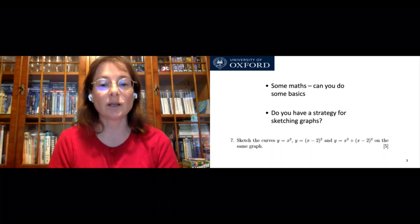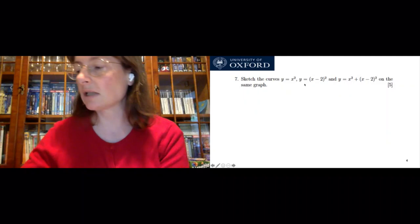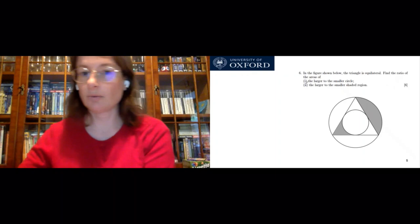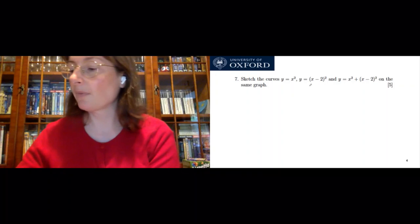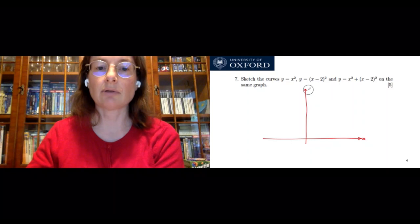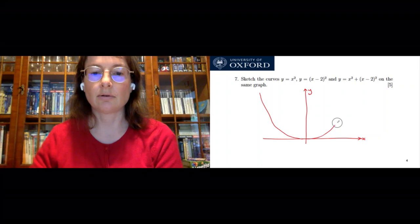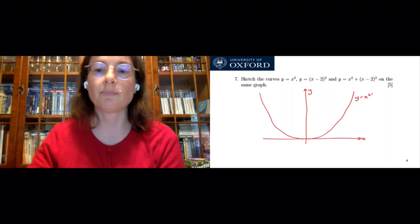Here is a question: sketch the graphs y equals x squared, y equals x minus 2 all squared, and y equals the sum of those two, all on the same graph. So let's sketch these. We've got some axes — x along the bottom, y going up. The graph y equals x squared is just a simple parabola, so we draw that standard shape and label it y equals x squared.